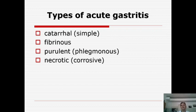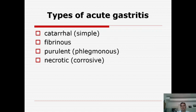There are four types of acute gastritis. Catarrhal or simple and fibrinous are the more favorable types. Purulent or phlegmonous and necrotic or corrosive are unfavorable types. Catarrhal and fibrinous gastritis means catarrhal inflammation; in fibrinous type, we see the appearance of films in the mucous membrane of the stomach. Purulent inflammation involves deep necrosis of the wall of the stomach.